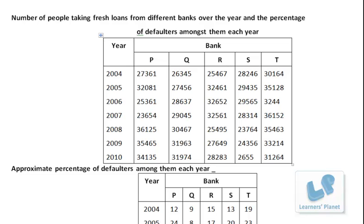Now friends let's take up the next set of questions. Here we have the number of people taking fresh loans from different banks over the year and the percentage of defaulters amongst them each year. Here we are given two tables - the table of loans as well as the table of defaulters. Friends, both the tables will not come in a single screen so I'll be scrolling the screen, so do not get confused.